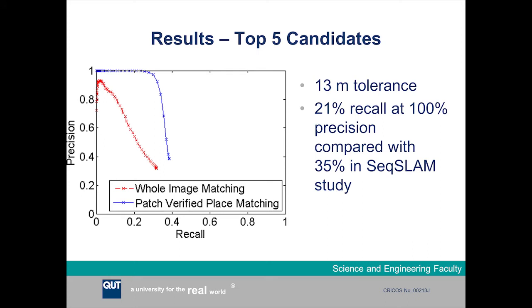This is a precision-recall curve for the entire dataset matching performance. The red curve shows precision-recall performance using just stage one, the whole image matcher, and the blue curve shows performance using the entire place recognition system. The system was able to achieve 21% recall at 100% precision. This is slightly lower than the 35% recall achieved in the original Sequence Slam study, but we're just using single frames here, not 300-metre sequences of images, so it's a much more challenging problem.